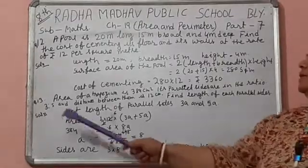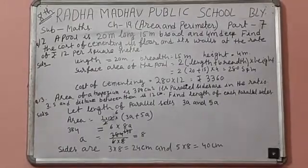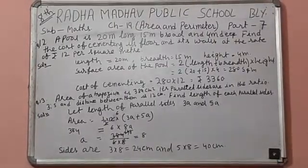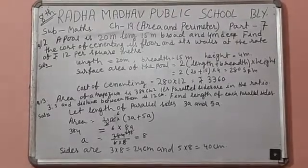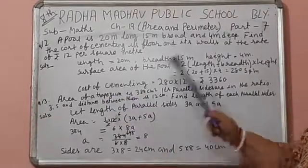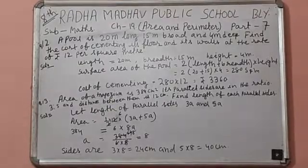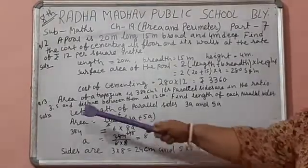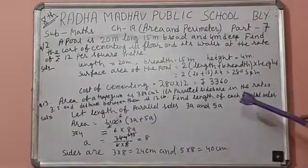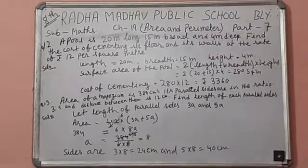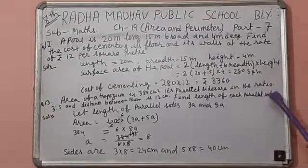Now, we come to question number 13, the area of trapezium. In our previous video, we said trapezium means two parallel lines and two non-parallel lines. Trapezium area is 384 centimeters squared, parallel sides are in ratio 3:5, and distance between them—the perpendicular distance—is 12 centimeters. Find the length of each parallel side.